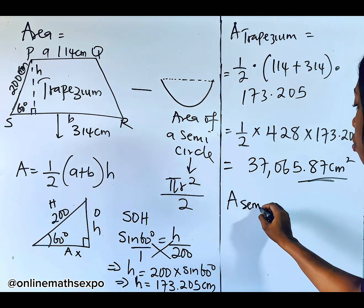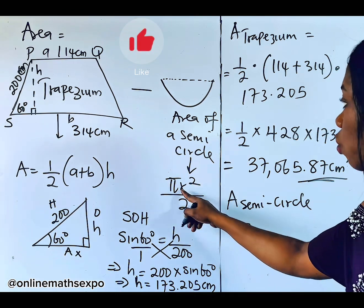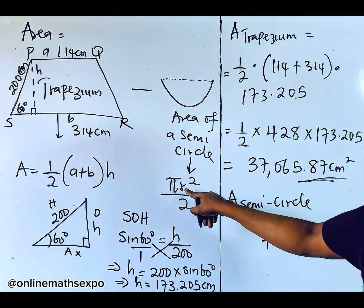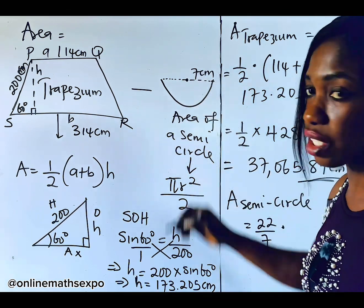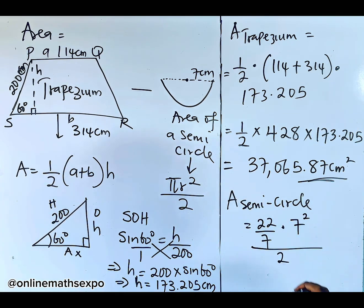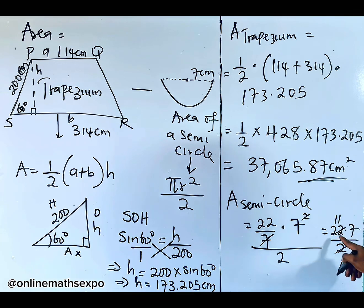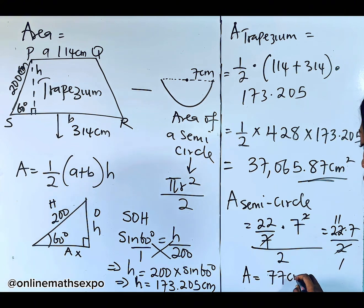Now let's get the area of the semi-circle using the formula πr²/2. We are told π = 22/7 and the radius is 7 centimeters. So: (22/7) × 7² / 2. One 7 cancels, leaving 22 × 7 / 2 = 11 × 7 = 77 square centimeters.